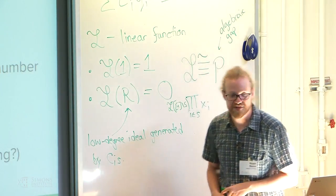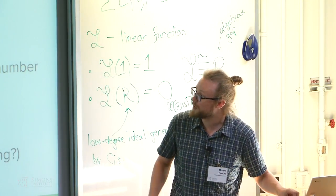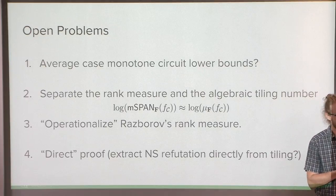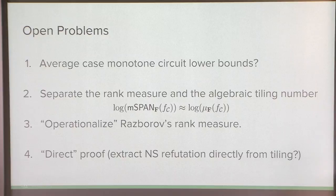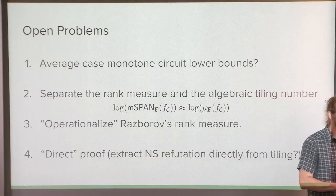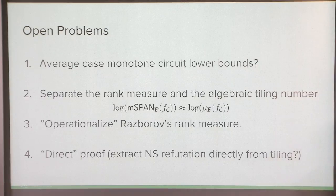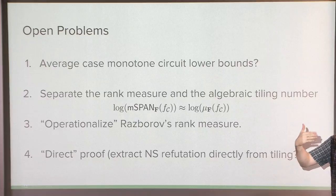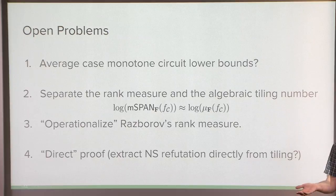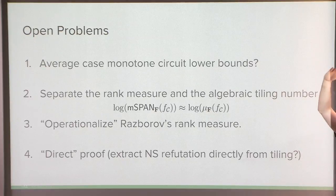Let me conclude with some open problems. One limitation is that this only works in the worst case setting. Average case monotone circuit lower bounds are extremely interesting, particularly over the uniform distribution — because monotone circuit lower bounds at the slice would imply non-monotone circuit lower bounds, so it's obviously of interest to try and push this further.